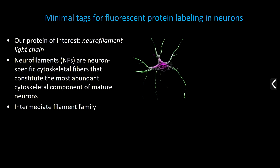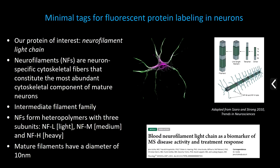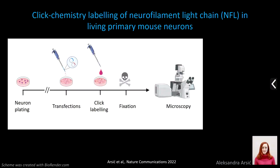We are interested in neurofilaments — cytoskeletal intermediate filaments specific for neuronal cells. They have a very small diameter, below the resolution limit, form heteropolymers, and we are particularly interested in neurofilament light chain, which is emerging as a biomarker for many diseases. At the basic cell biology level, we don't fully understand what happens to these proteins during injury — something we are studying in my group. We had problems with conventional labeling, which motivated us to develop click chemistry-based labeling for neurofilament light chain.